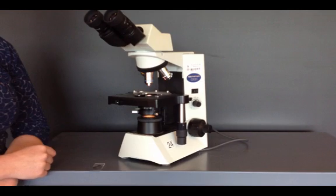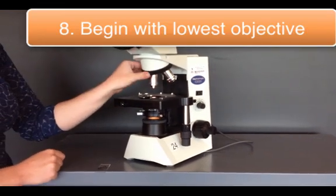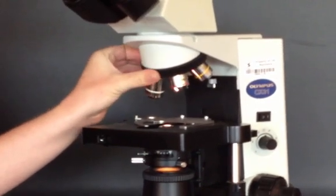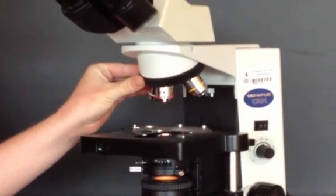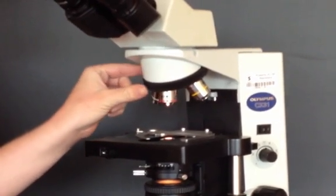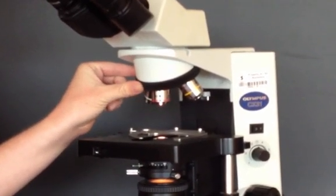Then you're going to turn to your lowest objective. Do so by rotating the objectives here until they click into place. Do not grab the objectives themselves, but instead use the rubber turn knob.